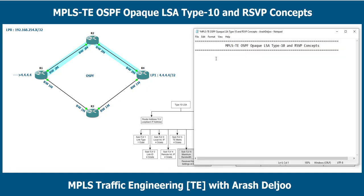In OSPF we use different LSA types for different functions. In OSPF version 2 we have LSA types 1 through 11. LSA type 1 is the Router LSA, type 2 is the Network LSA, type 3 is the Summary LSA, type 4 is the ASBR Summary LSA, type 5 is the External LSA, type 6 is the Multicast OSPF (MOSPF) LSA, type 7 is the NSSA LSA, type 8 is the External BGP Attributes LSA, and types 9, 10, and 11 are the Opaque LSAs.